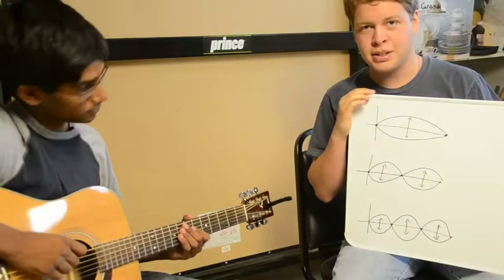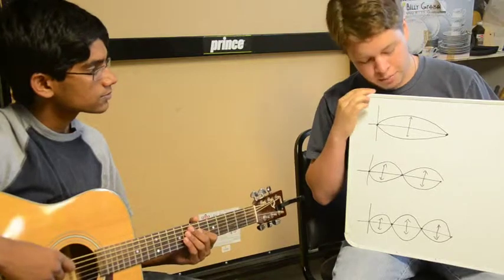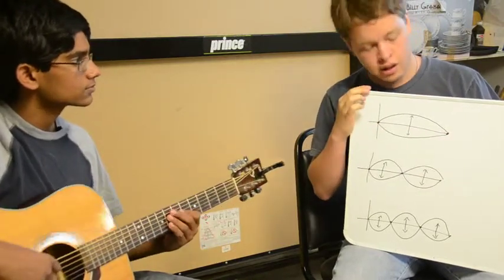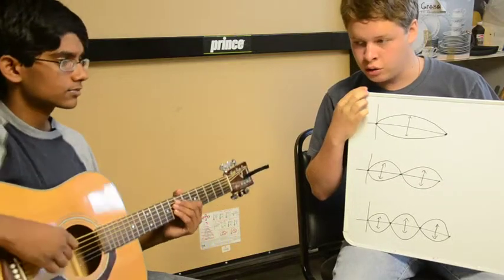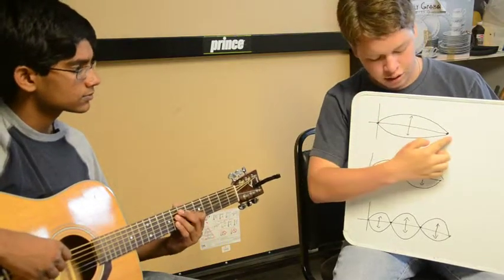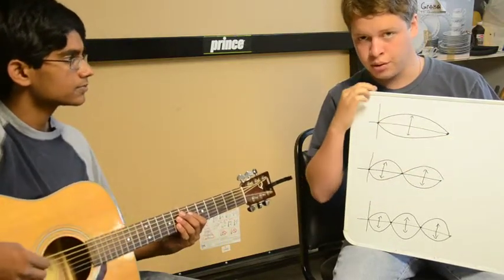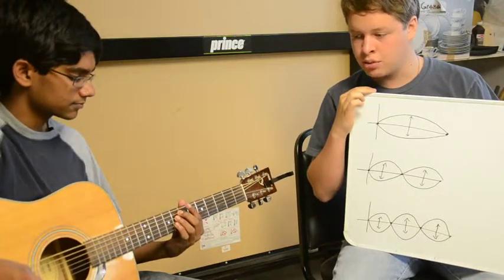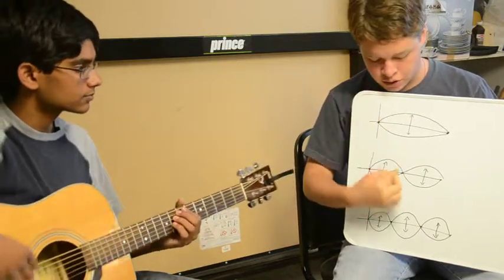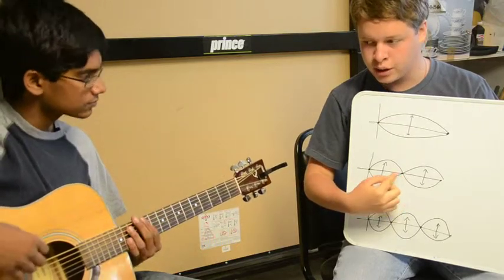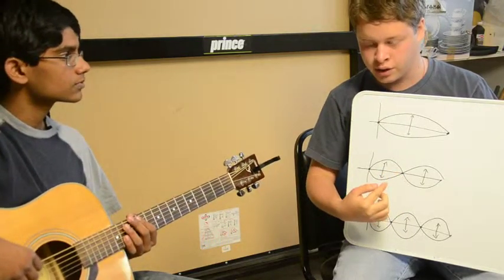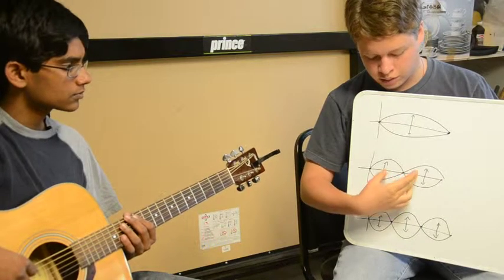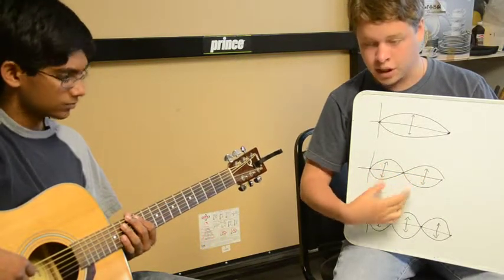Next we're going to be talking about nodes. Nodes are any point on the string, like here and here, that don't move throughout the vibration. Jerry's going to be playing an open string — there'll be a node at either end and it'll vibrate back and forth. Then he's going to mute the string by placing his finger on the string above the 12th fret without pressing down, which will create another node and make the string vibrate on either side.